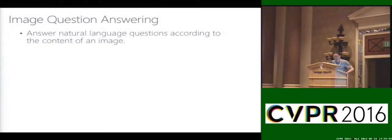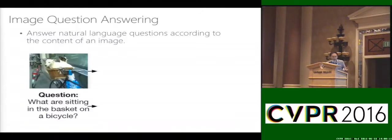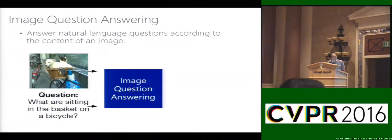First, what is Image Question Answering? Naturally, Image Question Answering means we want to answer natural language questions according to the content of an image. For example, given an image and given the question, we hope we can build an Image Question Answering machine which can infer the answer to this question, which could be 'dogs' for example. That's the setting of Question Answering for Image.